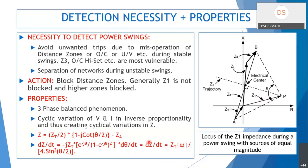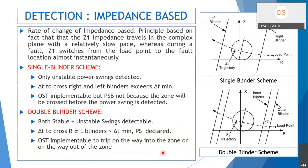The impedance seen from the relay to a load point is Z1, and its change is related to the change of the rotor angle. During a power swing, the load point impedance comes inside the distance zone. For an unstable swing it goes out the other side; for a stable swing it comes inside and returns back.